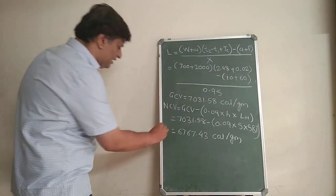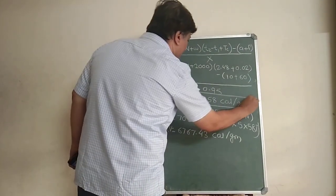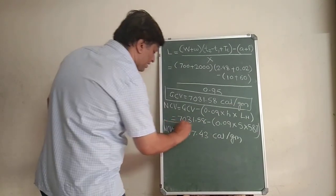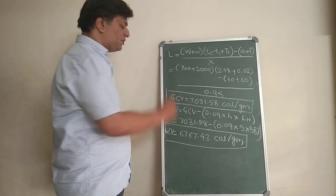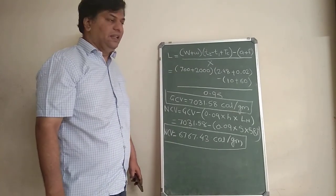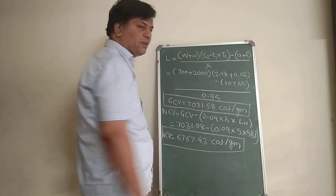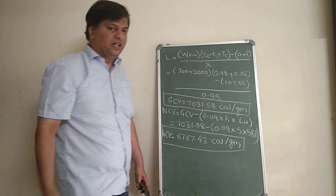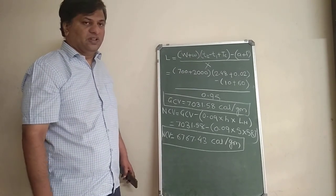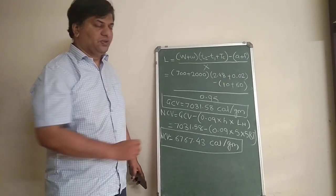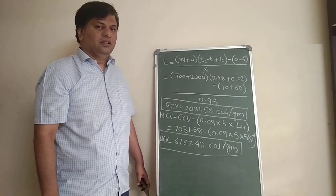So this is my answer, and in this way we can find out the gross calorific value and the net calorific value. In the exam, they ask this numerical for 4 marks — 2 marks to calculate gross calorific value and 2 marks for calculating net calorific value. You have to write down the unit, which is either calories per gram or kilocalories per kilogram — these are one and the same. If required, we can also convert this unit to joules, as we have seen the conversion during the theory. I hope you understood this numerical. Based on this, we will do more practice. Thank you for attending the lecture.